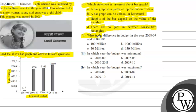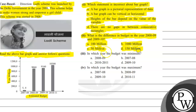Second question: what is the difference in the budget in the year 2008-09 and 2009-10? Option A: 100 million. Option B: 1000 million. Option C: 50 million. Option D: 150 million.